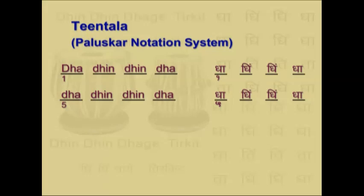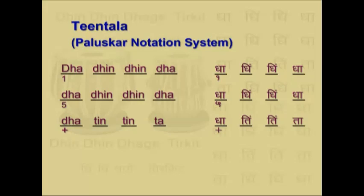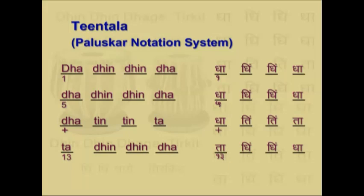The second line will again be dha din dhinda. In the third line, you have dha tin tin ta. The first dha is of khali, so you write a plus sign below dha. The fourth line goes ta din dhinda — ta is the third clap, so you write number 13 below the first alphabet ta.